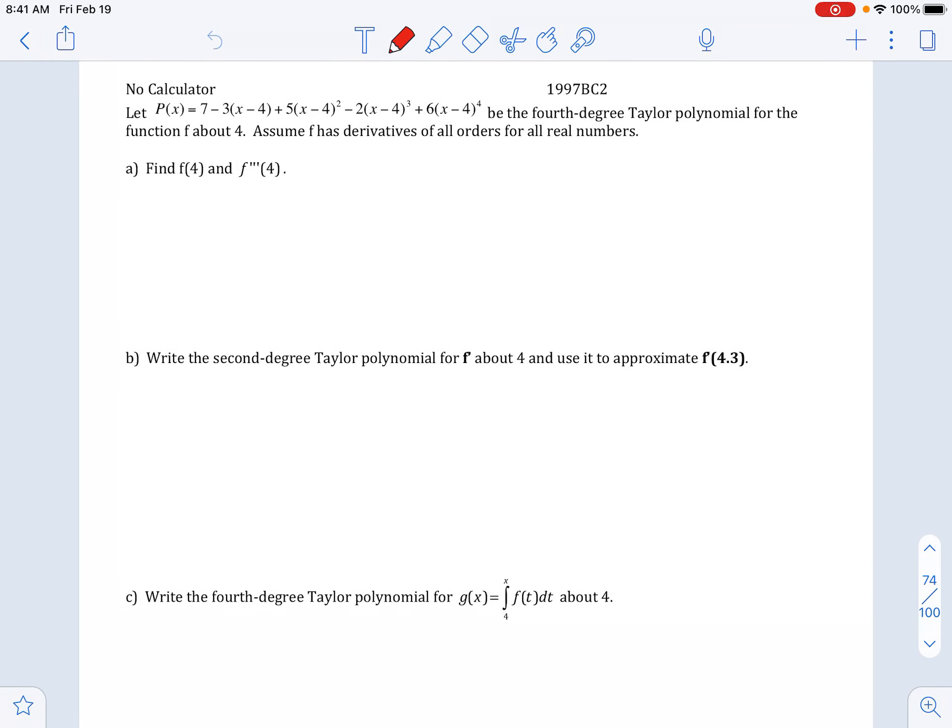Okay, we are given a polynomial of the fourth degree. Notice that it is centered about x equals 4, and it tells us that all derivatives exist.